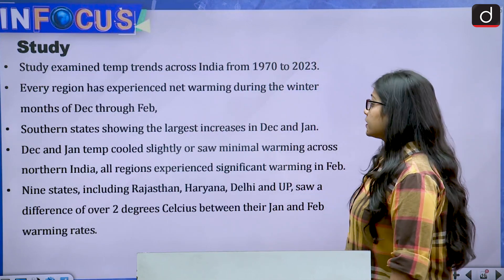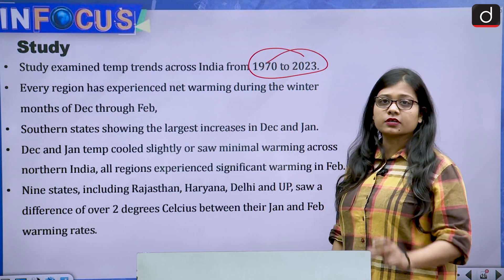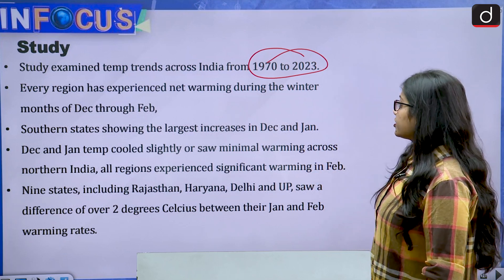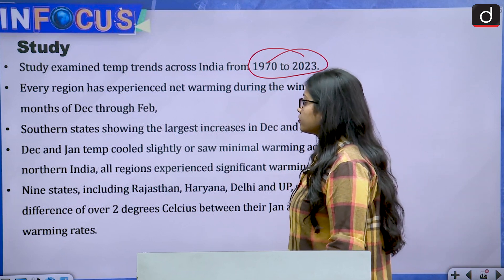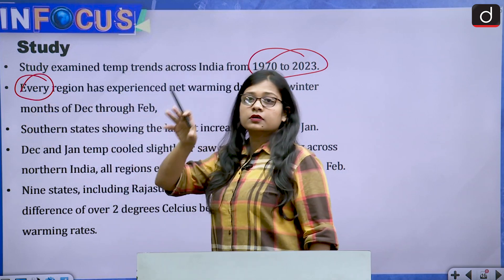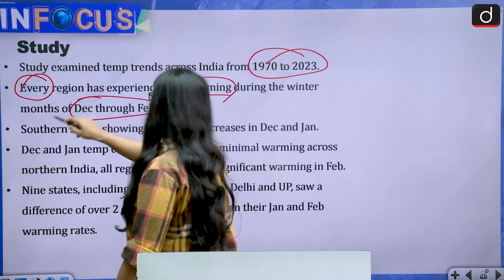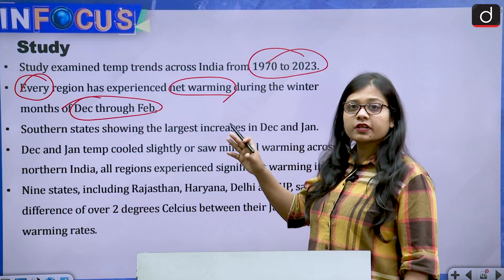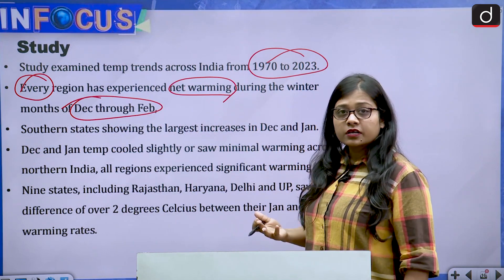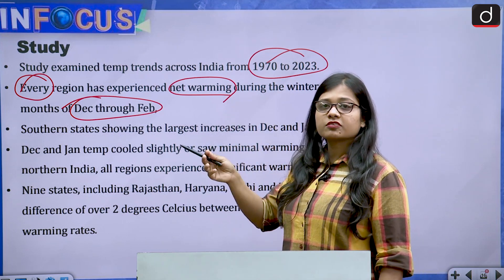The study examined temperature trends across India from 1970 to 2023 — a time period of around 50 years. Every region has experienced net warming during the winter months of December through February. Since winter months are already seeing a rise in temperature, we can expect that spring months will also see a rise in temperature and summers will be very hot.